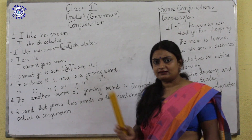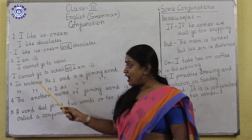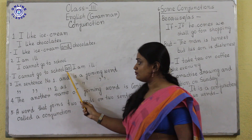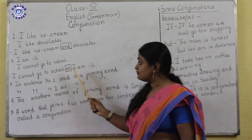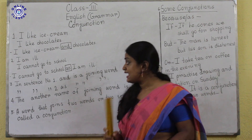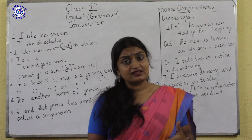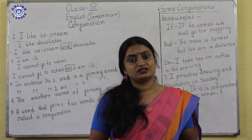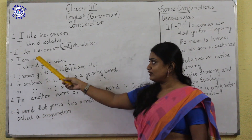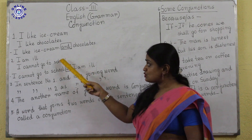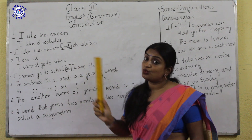How can we understand that there are two sentences? The conjunction comes after the verb. Here is the verb and here comes the conjunction. If we get another verb after the conjunction, then there are two sentences. So if we get two verbs — one before the conjunction and one after the conjunction — then the conjunction is joining two sentences. And if we get one verb, like 'I like chocolates and ice creams,' then the conjunction is joining two words.